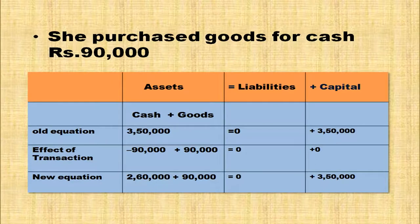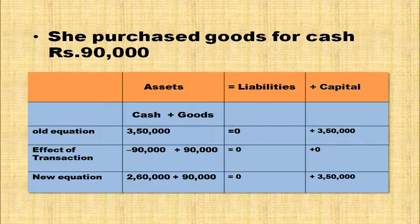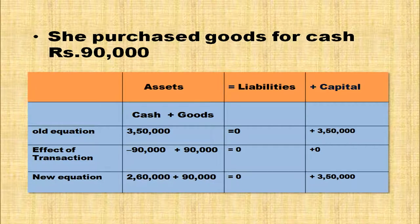She purchased goods for cash rupees 90,000. In the asset side, open a column for goods and add 90,000. When goods are purchased, cash is going from the business, so in the cash column deduct 90,000. Cash balance comes to 3,50,000 minus 90,000, that is 2,60,000, plus goods worth 90,000. Asset side value becomes 3,50,000, and the right-hand side — liabilities plus capital — is also 3,50,000. Accounting equation is satisfied.